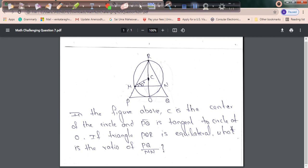In the figure above, C is the center of the circle and PQ is the tangent to the circle at O. If triangle PQR is equilateral, what is the ratio of PQ by MN?